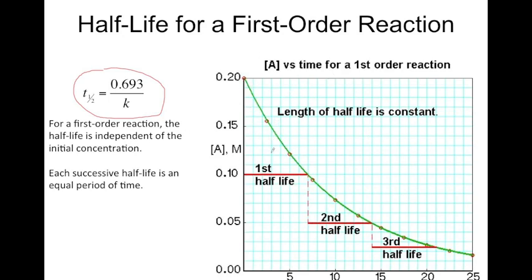Examine the graph here. If we start at an initial concentration of 0.2 molar, the time it takes for that concentration to decay to 0.1 molar is the half-life — in this case about seven seconds. For the second half-life, the time to go from 0.1 molar to 0.05 molar is also seven seconds. The third half-life, from 0.05 to 0.025 molar, is again seven seconds. This graph shows the first three half-lives for this first-order reaction.